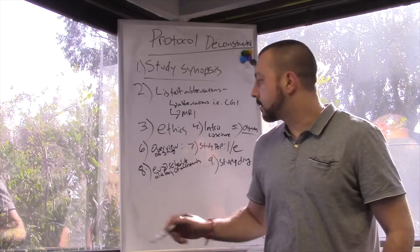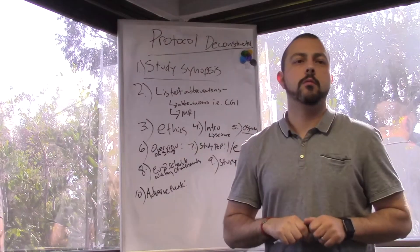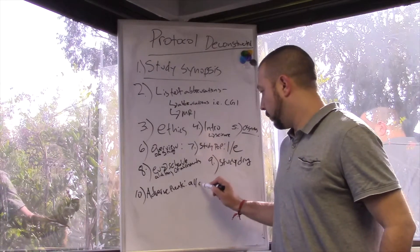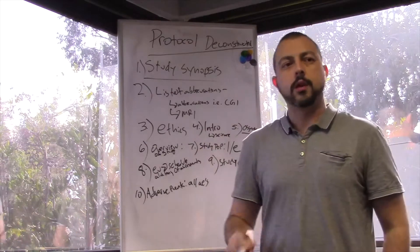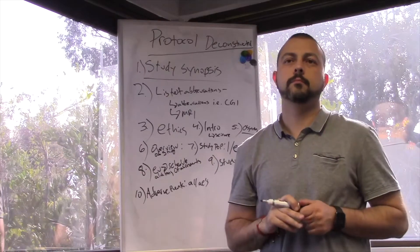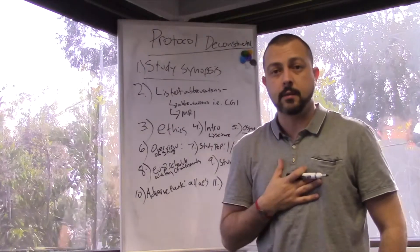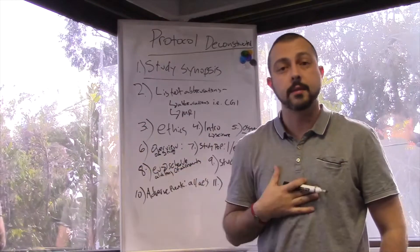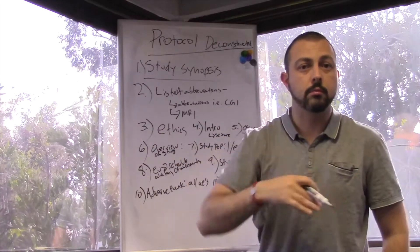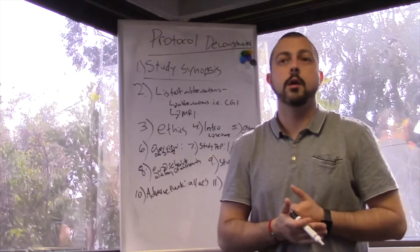Number ten is adverse events. What do they say about adverse events? It's just stating that all adverse events will be captured as per GCP. It's stating all AEs will be captured. It defines what an AE is. Can you define it real quick? An AE is any untoward medical occurrence associated with use of a drug in humans, whether or not considered drug-related. That means an AE, if I'm in a study and I go to a restaurant while I'm in the study and I choke on a chicken bone and I go to the hospital, that's an AE. It might be an SAE too.